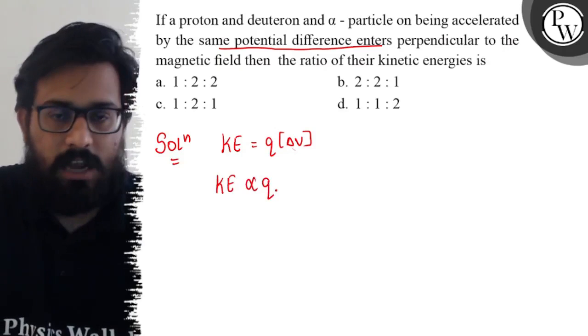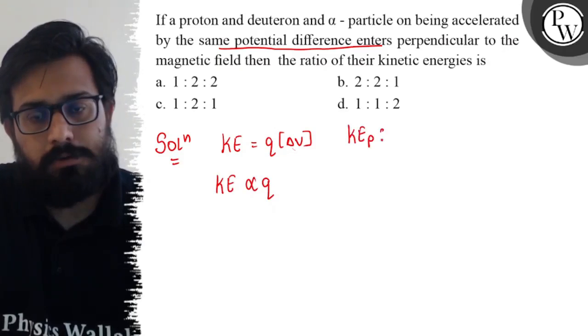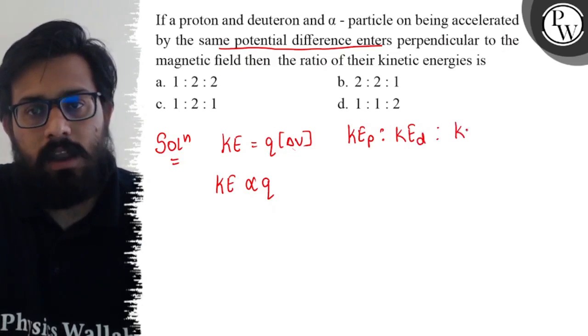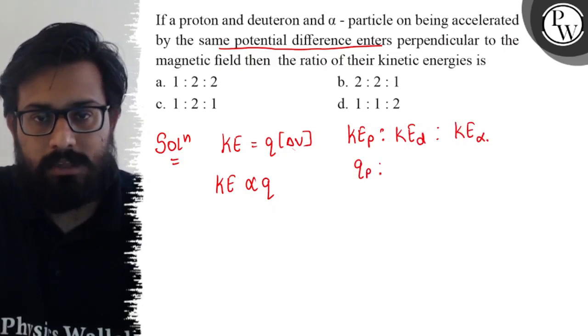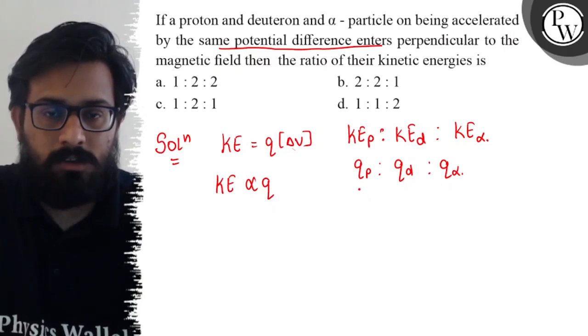If we talk about the kinetic energy for the proton to kinetic energy for the deuteron to kinetic energy for the alpha particle, this can be written as charge of the proton to charge of the deuteron to charge of the alpha particle.